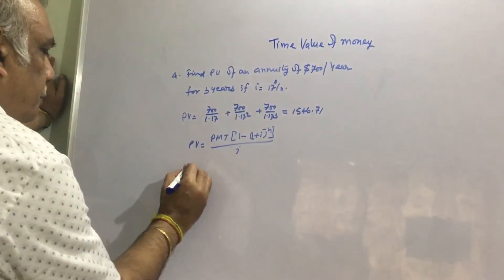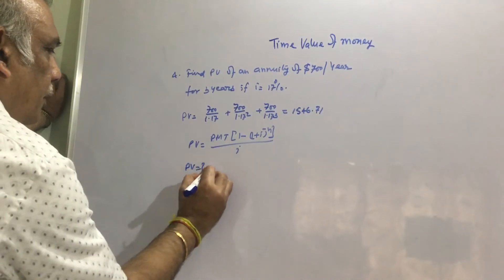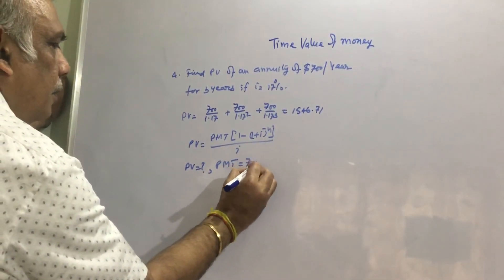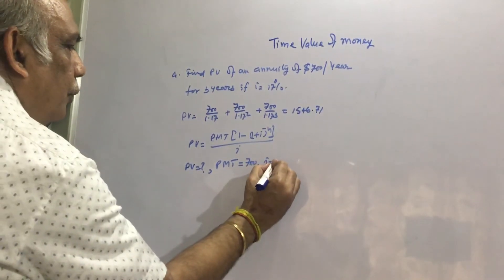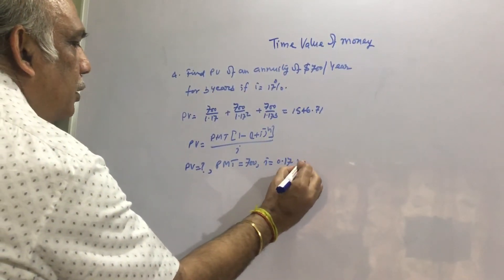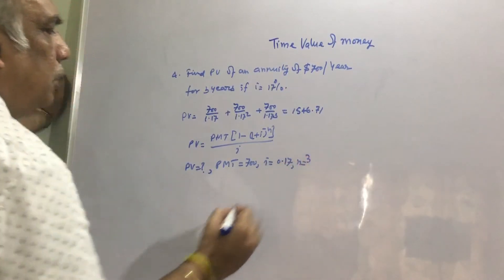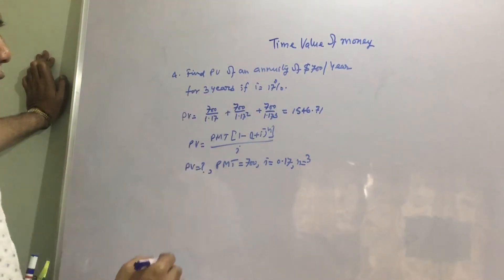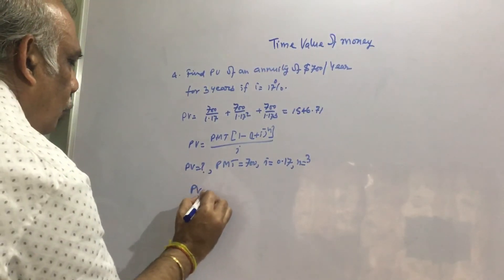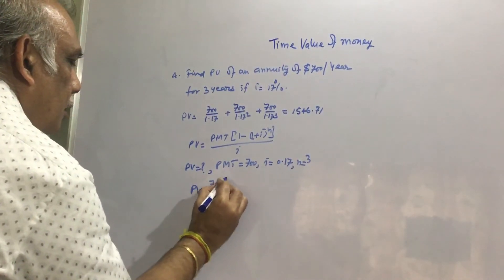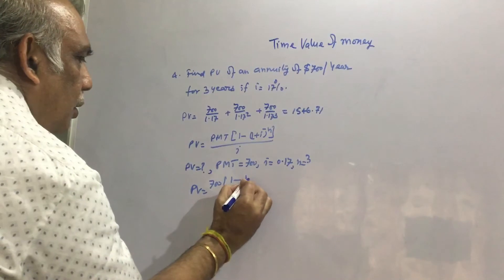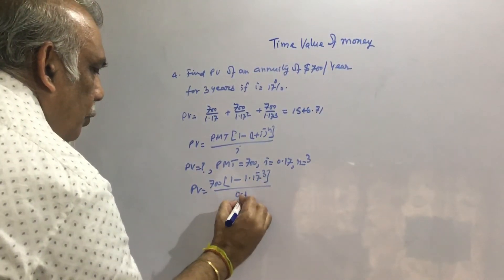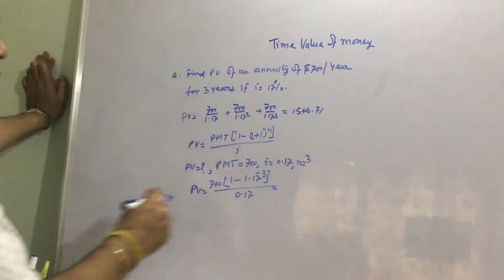Here PV is to be calculated. PMT equals $700, i equals 0.17, and n is equal to 3. So PV will be equal to 700 times [1 minus (1.17) to the power negative 3] divided by 0.17. If you calculate this, you get the same answer.